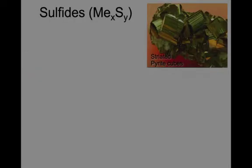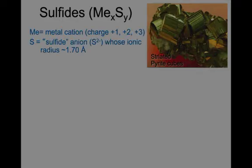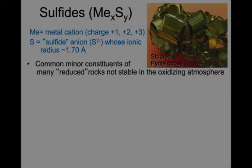Now let's look at five examples of sulfides. Sulfides have a general formula MₓSᵧ, where M is a metal cation with a charge of 1, 2, or 3, and S is the sulfide anion S²⁻ whose ionic radius is 1.7. On the right, striated pyrite cubes. Sulfides are common minor constituents of many reduced rocks; they are not stable in the oxidizing atmosphere.